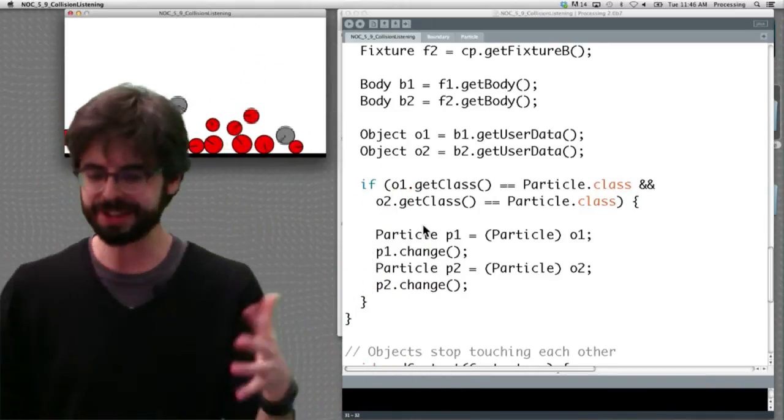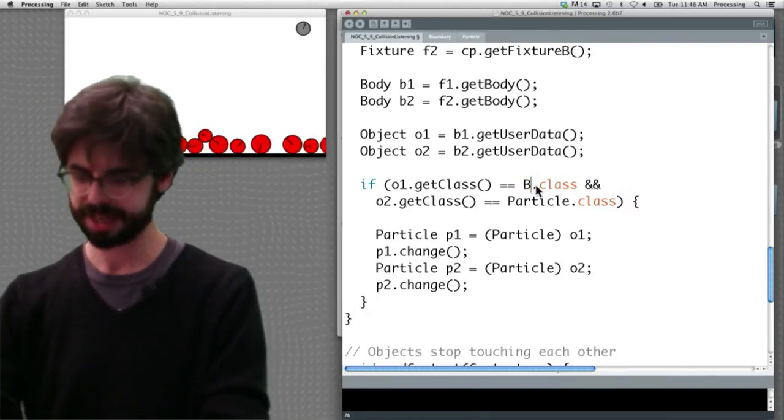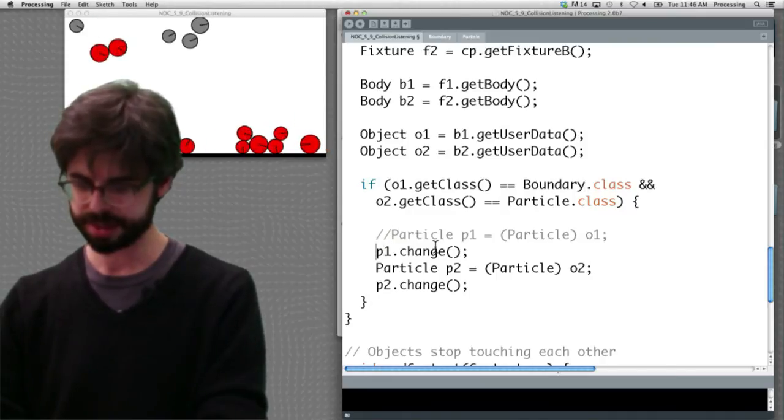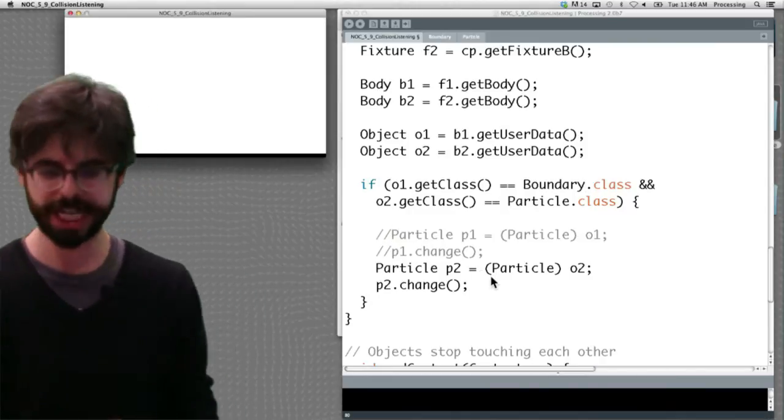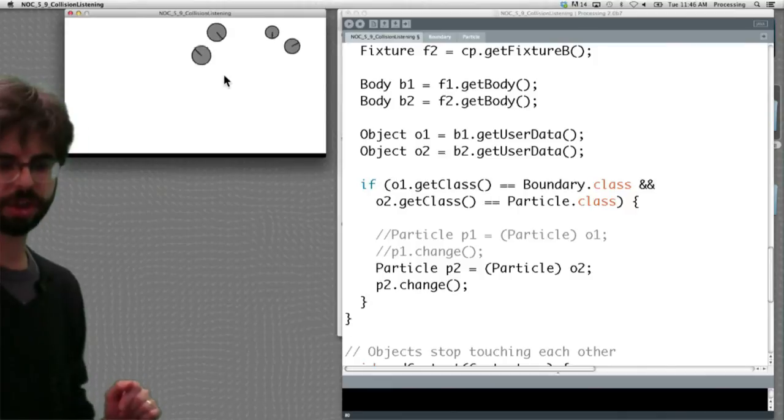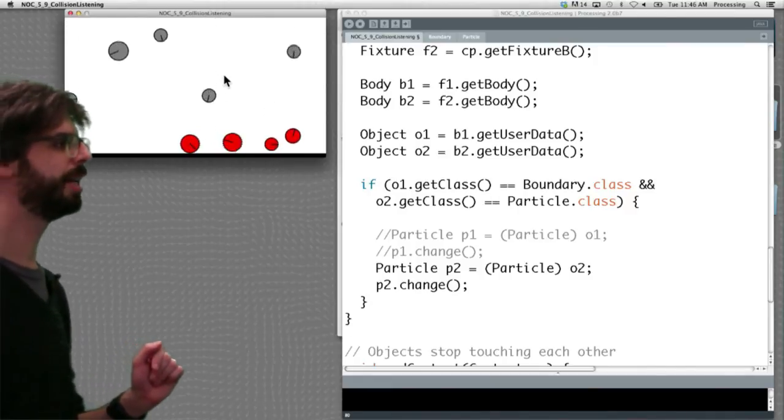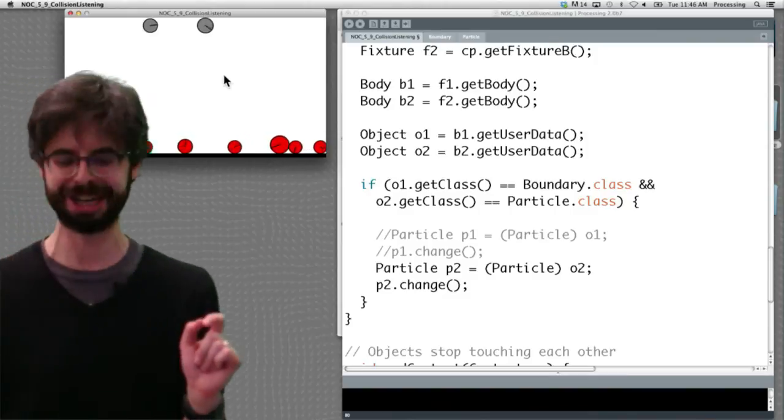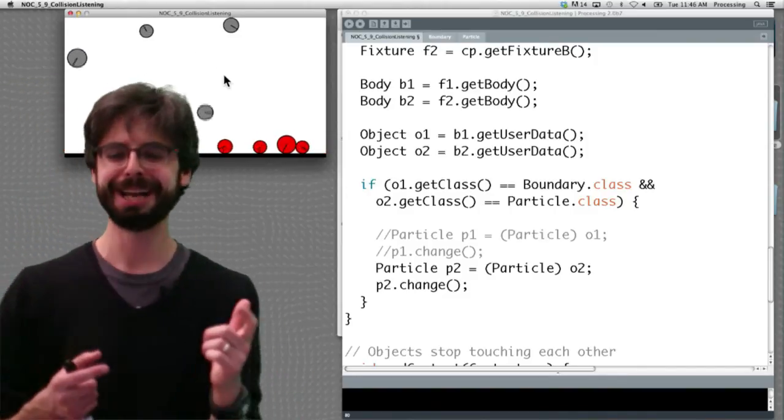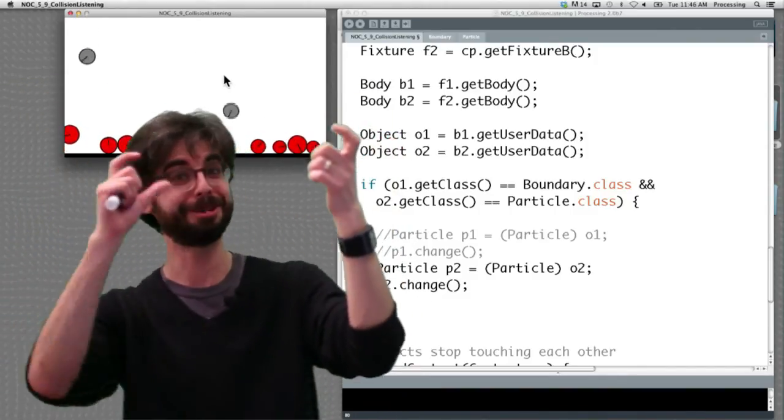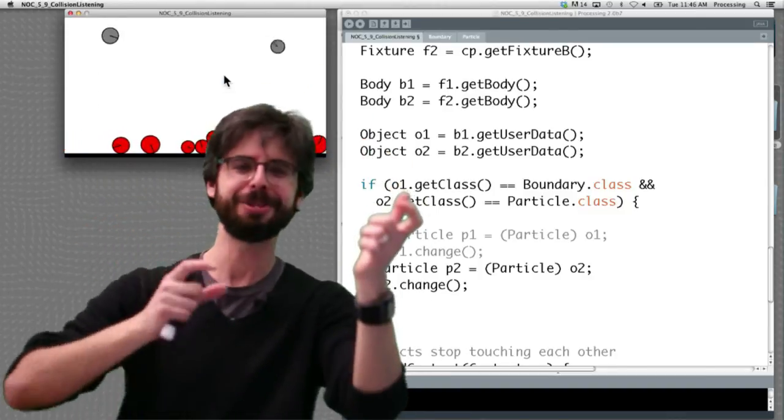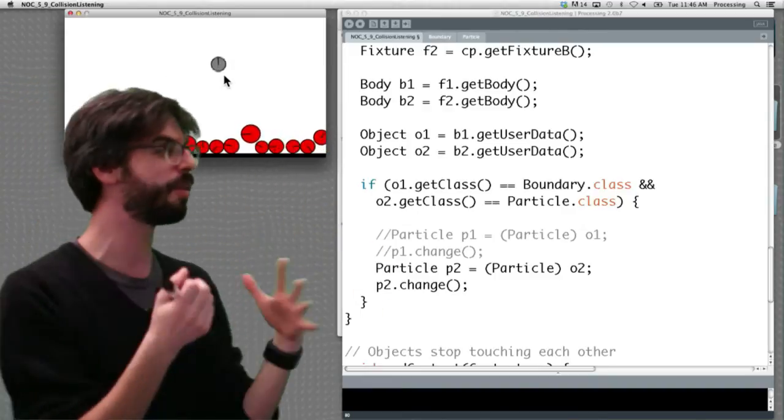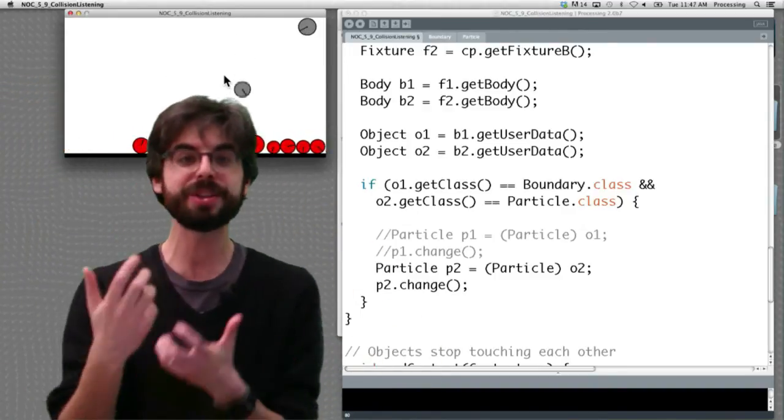So we could even just change, like look at this, if I just said, hey, if object one is a boundary, then change object particle two. Now look at what's going to happen. Now they're turning red when they hit the boundary. Now we got lucky here because we really should check, well, it could be that object one was a particle and object two is a boundary, or object one was a boundary and object two is a particle. So we probably should have revised our if statement in a slightly more flexible way, but you can see where this is going.